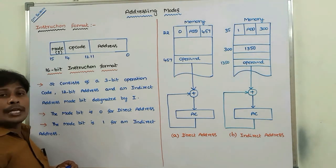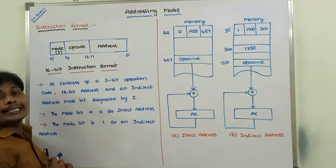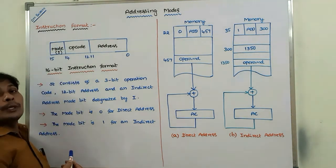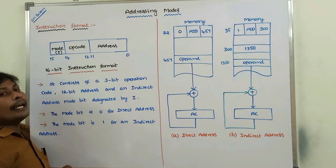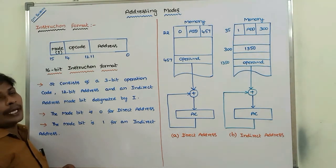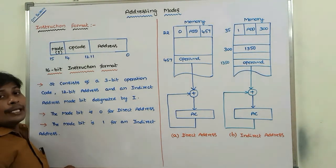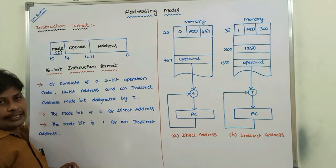The second part specifies the operation to be performed, and the third part specifies the mode bit. The mode bit is denoted by I. If I equals 0, it indicates direct addressing. If I equals 1, it indicates indirect addressing. Based on the mode bit, we retrieve the operand from memory using either direct or indirect addressing to perform the operation.